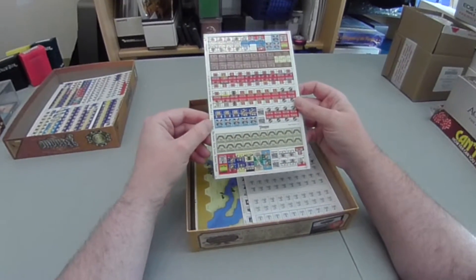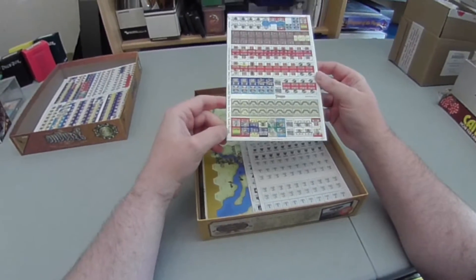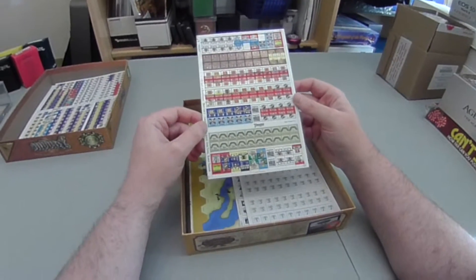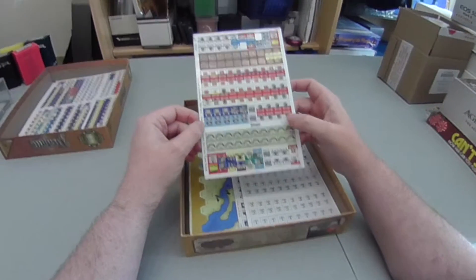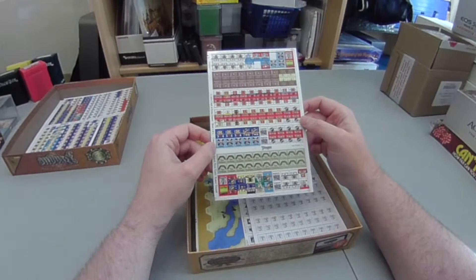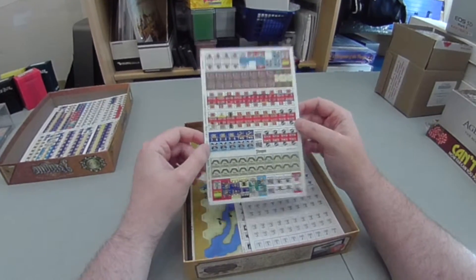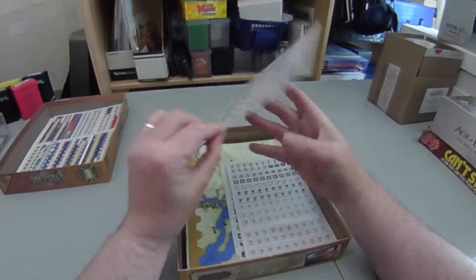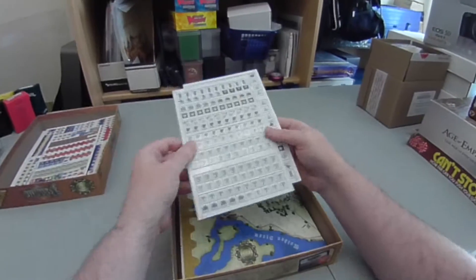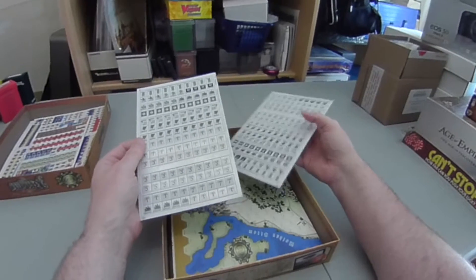Second sheet there, again, beautiful counters, really nicely done. Lots of interesting information. You've got field works here, light and heavy field works. You've got artillery. So I don't think anybody can complain about the quality of the counters in this.